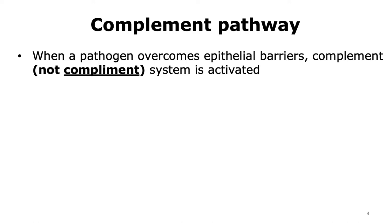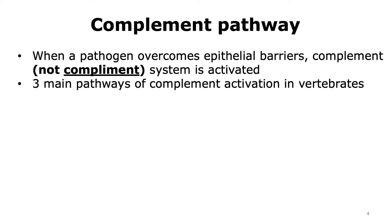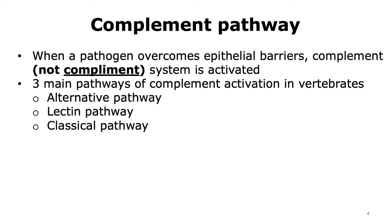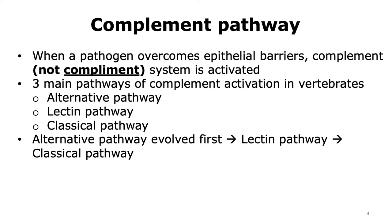When a pathogen is able to overcome the epithelial barriers of the host and enter the host, that is when the complement system is activated. There are three main pathways of complement activation studied in vertebrates: the alternative pathway, the lectin pathway, and the classical pathway. The complement system is an ancient form of host defense, and when we look at its evolution, the alternative pathway evolved first, followed by the lectin pathway, and then the classical pathway.